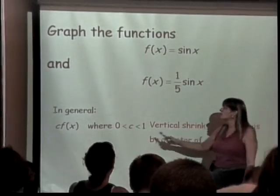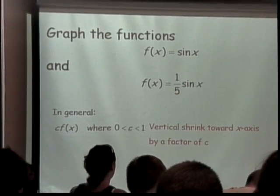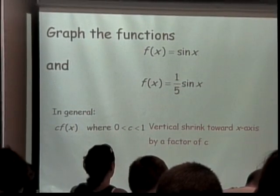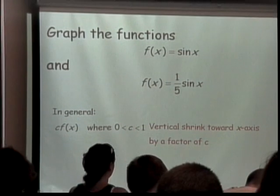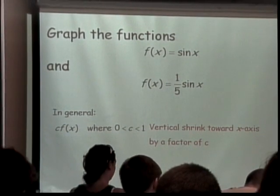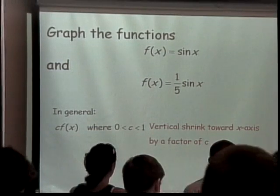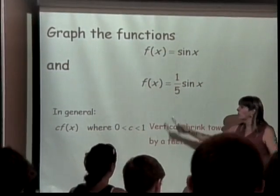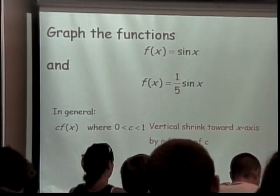But notice, this number is between 0 and 1. We didn't get to the negative stuff, because like I said, the negative part is a thing all its own. It's the reflecting stuff. The 1 fifth, if you have a number that's between 0 and 1, it is going to vertically shrink your function when it's outside the function. So it's going to vertically shrink your graph. So now instead of going all the way up to 1, it only goes up to 1 fifth.